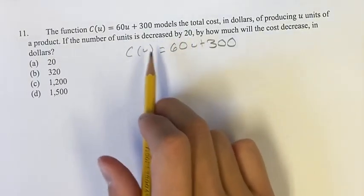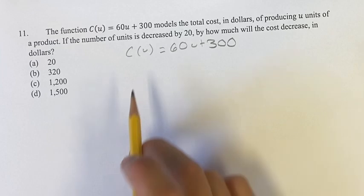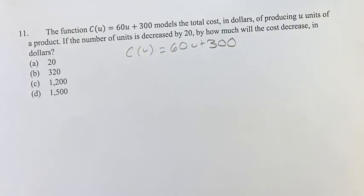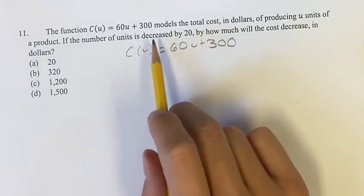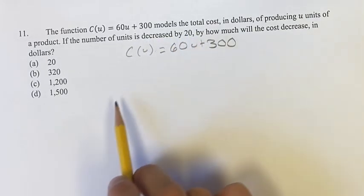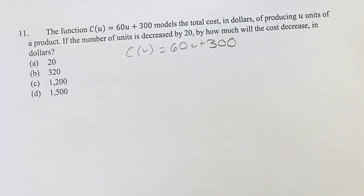We're asked if we decrease u by 20, how much will the cost C(u) decrease? Now, if you notice that our rate of change is 60, and if we're decreasing u by 20, that's going to decrease it by 60 times 20.